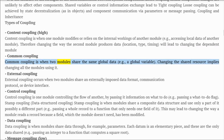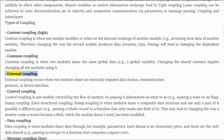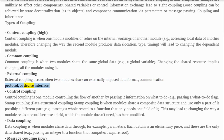Common coupling: when two modules share the same global data, e.g., a global variable. Changing the shared resource implies changing all the modules using it. External coupling: occurs when two modules share an externally imposed data format, communication protocol, or device interface.